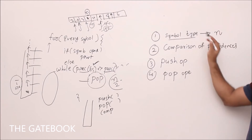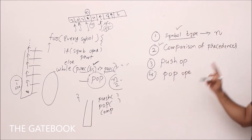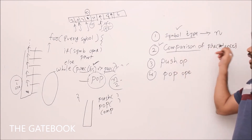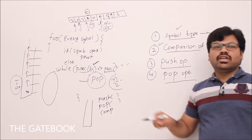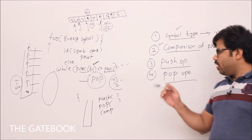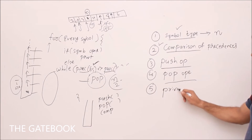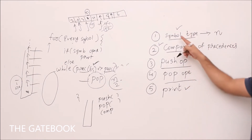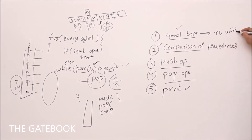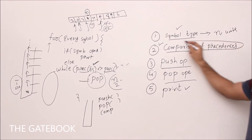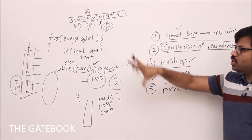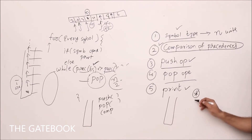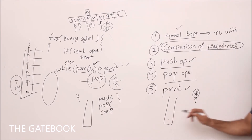In the algorithm, you are comparing the precedences of the top of the stack and the current symbol. There are some push operations, some pop operations, and maybe one more thing — printing. You are printing in the output. How many times? For every symbol, only once. We also assume printf takes one unit of time.